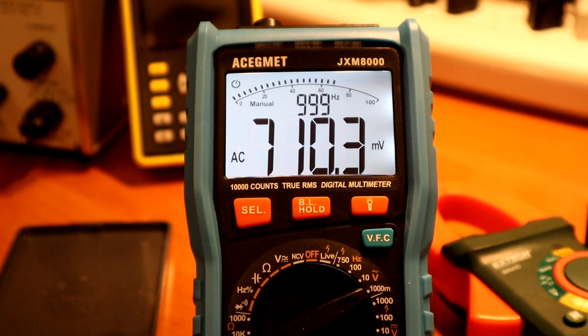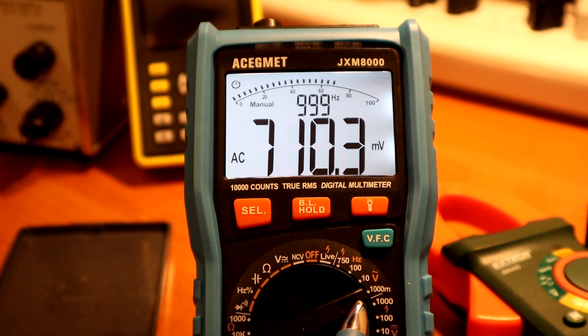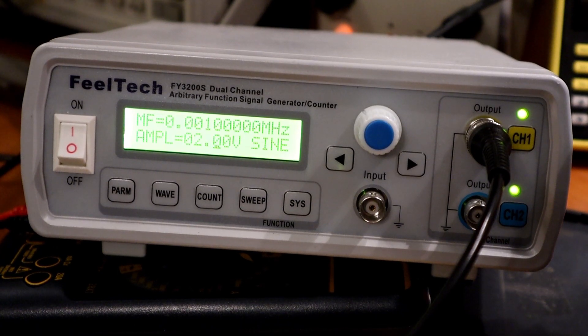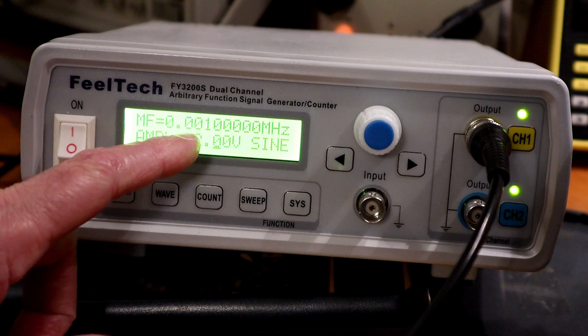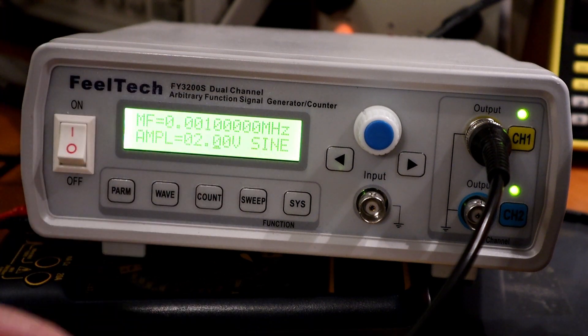So here I've set it on the 1000 millivolts scale, 1 volt scale that is, and it's in AC volts mode. I'm feeding in a signal which is 1 kilohertz, 2 volts peak to peak, from an arbitrary waveform generator.